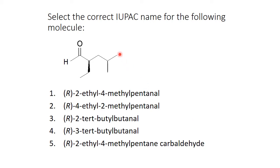Well, if I look at this compound, the principal chain, the longest chain with the functional group, has 1, 2, 3, 4, 5 carbons, so it's going to be a pentanal.